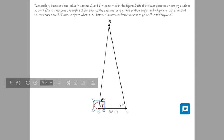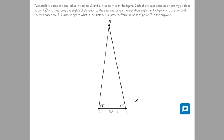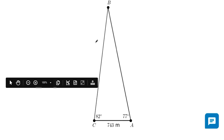These are the elevation angles. And then the fact that the two bases are 743 meters apart, what is the distance from the base at point C to the airplane? So they're wondering how far is it from here to here, this line. So we'll call that our x.